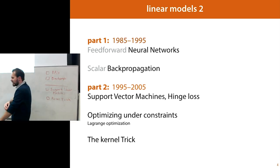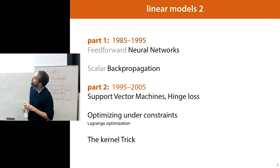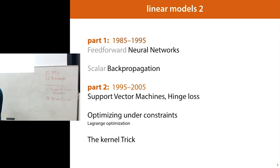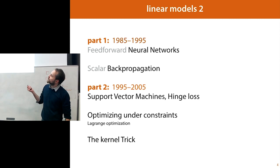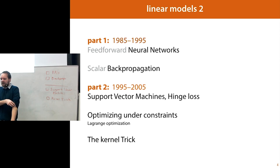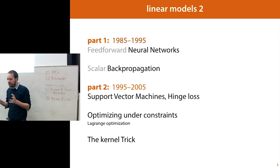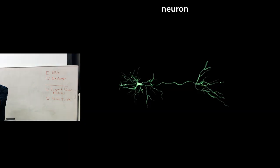They were very popular. Then after about 1995 they went out of fashion — we'll look at why that might have been. Support vector machines came in and were very popular. Then around 2005, support vector machines went out of fashion and neural networks came back in a big way. We'll look at the reasons for that. But first, let's start here.